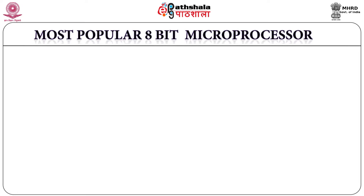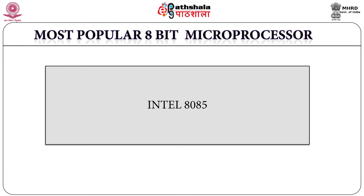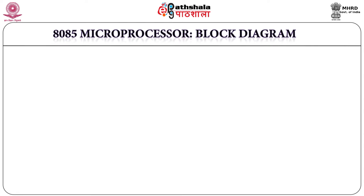Continuous improvement in silicon technology resulted in frequent upgradation of existing hardware. Intel Corporation came up with a modified version of the 8080 microprocessor, named as 8085 in 1976. The 8085 was the most popular microprocessor among all 8-bit microprocessors.